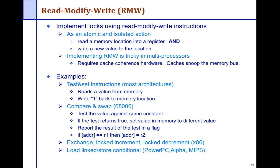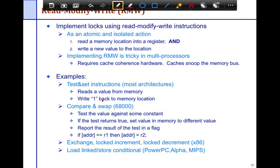The next instruction we're going to look at is a compare and swap. The compare and swap is a slightly more generic instruction than a simple test and set. With compare and swap, you have a location with some value v. You read the location and check if the value is v. If it's equal to v, then you write a new value n.